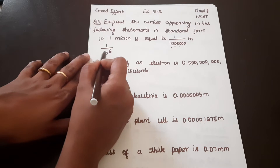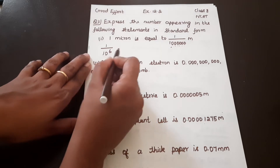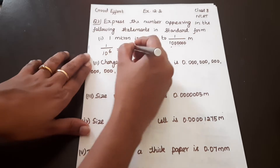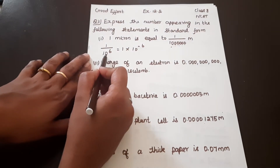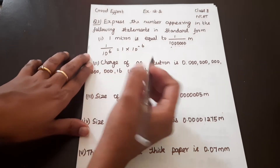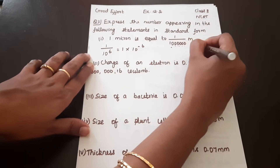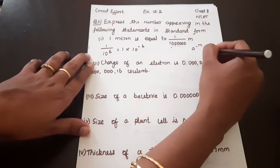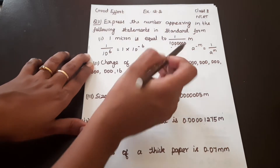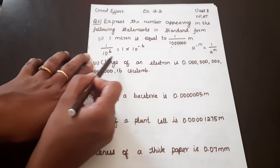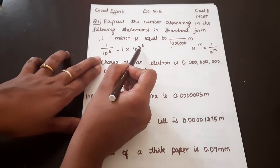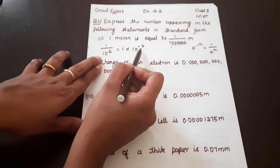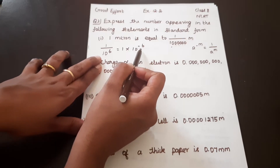10 raise the power 6 is the same. So, 1 into 10 raise the power minus 6. Here we have a positive exponent and we need to write it as a negative exponent. Using the rule: a raise the power minus m is equal to 1 by a raise the power m. So the answer is 1 into 10 raise the power minus 6.